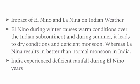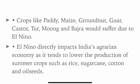Now let's talk about the impact of El Niño and La Niña on Indian weather. El Niño during winter causes warm conditions over the Indian subcontinent. It leads to dry conditions and a deficient monsoon — jiske kaaran paani bahut kam girta hai. Whereas La Niña results in better than normal monsoon in India. India experiences deficient rainfall during El Niño years. Crops like paddy, maize, groundnut, jowar, castor, cotton, moong and bajra suffer during El Niño. El Niño directly impacts India's agrarian economy, as it tends to lower the production of summer crops such as rice, sugarcane, cotton and oilseeds.